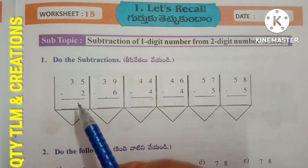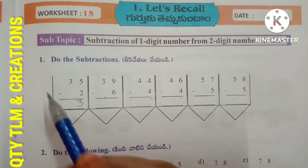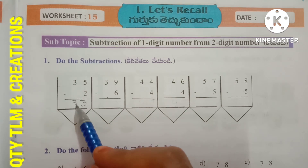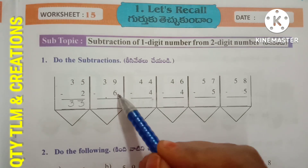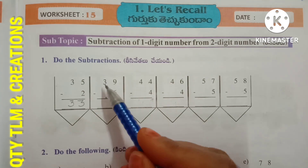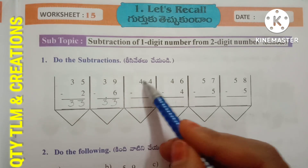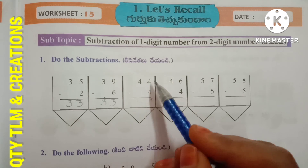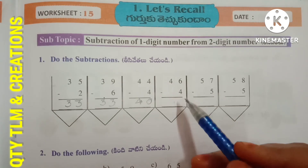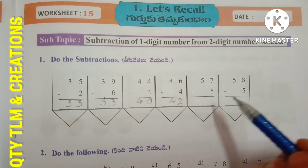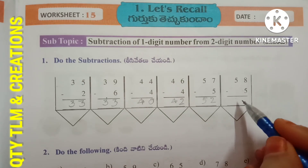Worksheet 15, subtopic: subtraction of one-digit number from two-digit number. First question: do the subtraction. 35 minus 2: subtract 2 ones from 5 ones, we get 3, write 3 in ones place and 3 in tens place — result is 33. 39 minus 6: subtract 6 from 9, we get 3, write 3 in ones place and 3 in tens — result is 33. 44 minus 4: subtract 4 from 4, we get 0, write 4 in tens — result is 40. 46 minus 4 gives 42. 57 minus 5 gives 52. 58 minus 5 gives 53.